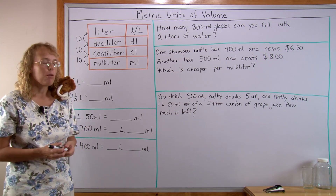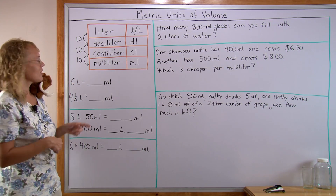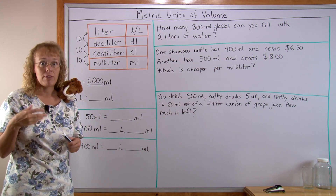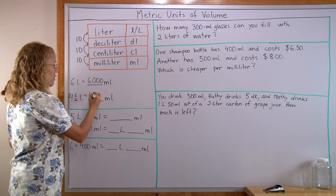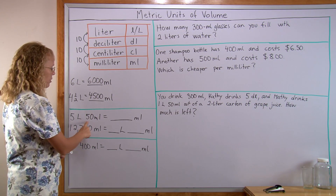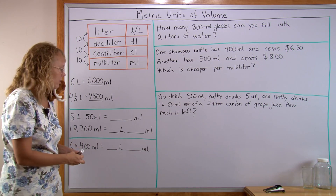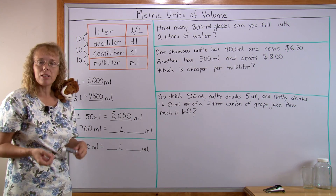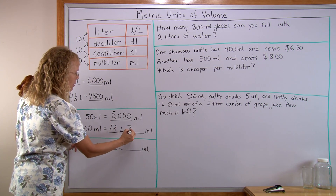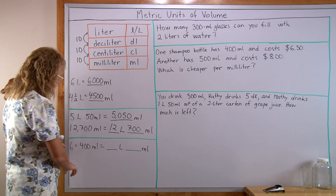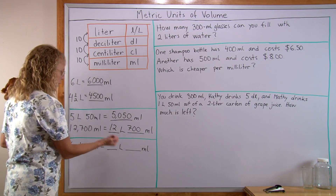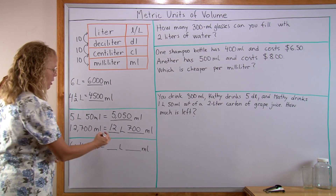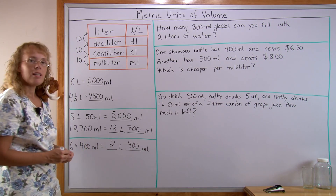Let's do some conversions now. These are pretty easy — all we need to do is remember that one liter is 1000 milliliters. So 6 liters is 6000 milliliters. About 4 and a half liters: half a liter would be 500 milliliters, so 4500. Here, 5 liters 50 milliliters: 5 liters makes 5000 milliliters, so 5050. Then 12,700 milliliters: 12,000 milliliters makes 12 liters and we have 700 milliliters left over. And 6 times 400 milliliters: 6 times 4 is 24, tag two zeros, so 2400 — that's 2 liters and 400 milliliters.